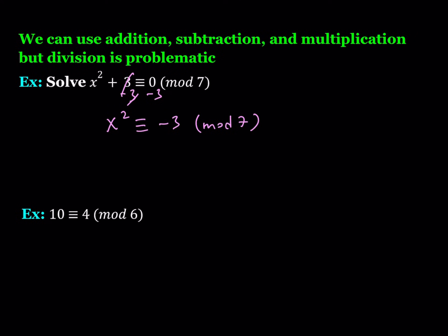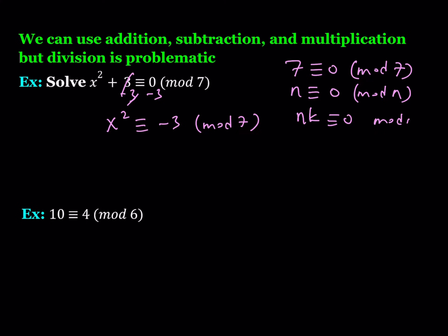Obviously negative 3 as a perfect square doesn't make sense — we're keeping it real. So x squared is congruent to negative 3 mod 7. One helpful property is that 7 is congruent to 0 mod 7, because the difference between 7 and 0 is divisible by 7. More generally, n is congruent to 0 mod n always, and any multiple nk is also congruent to 0 mod n.